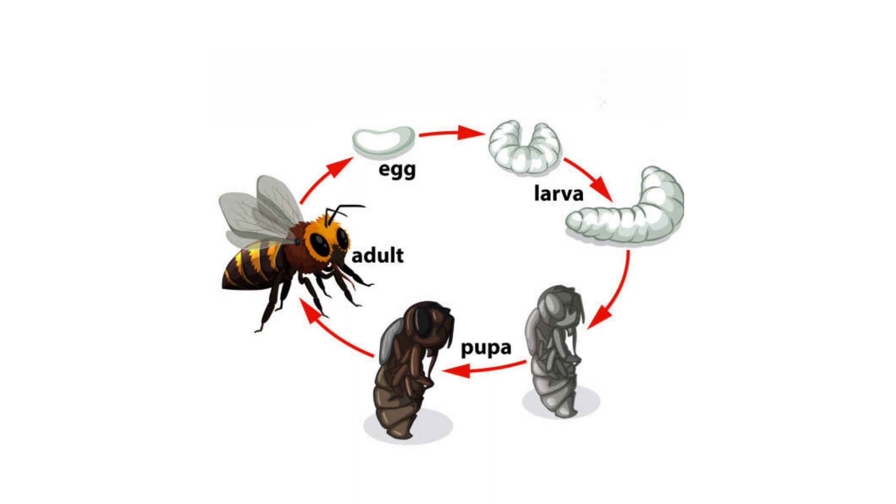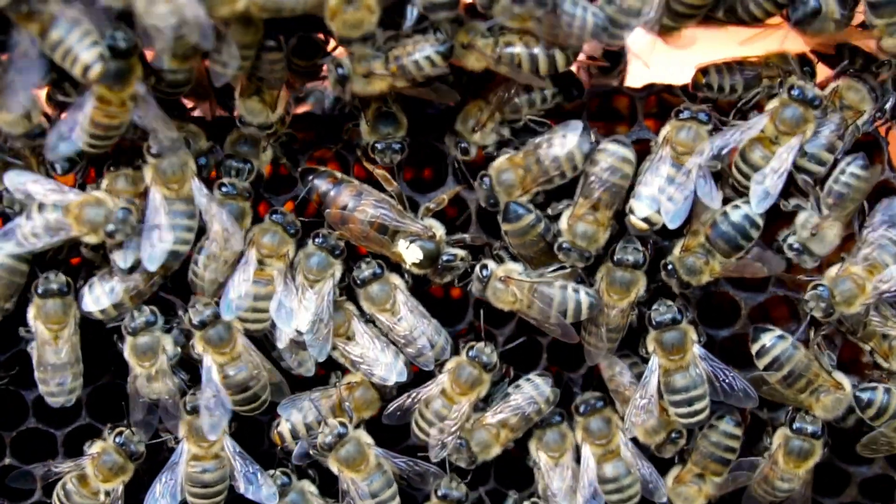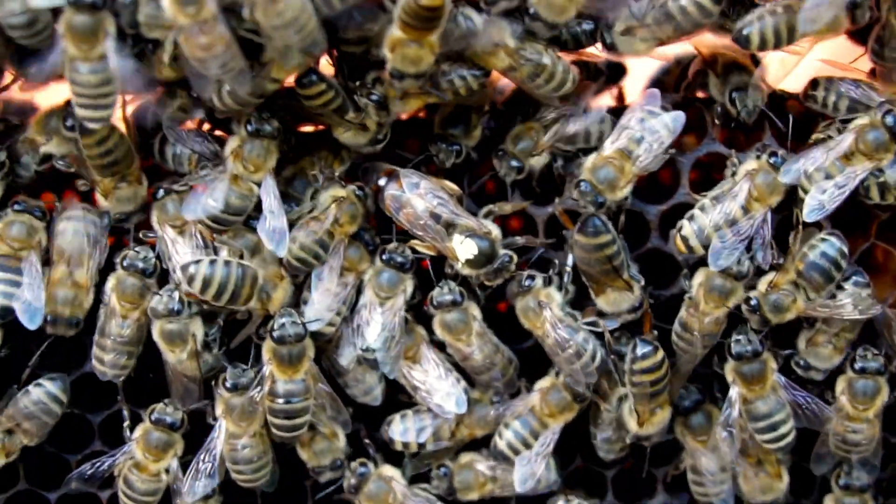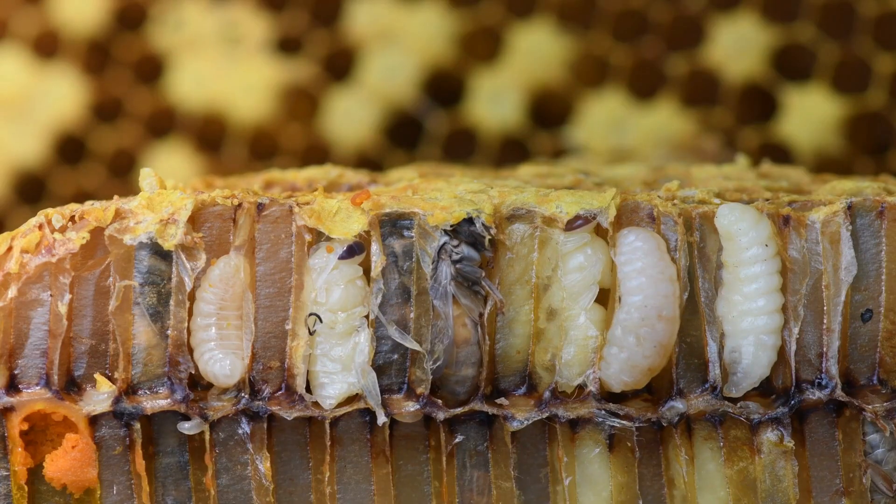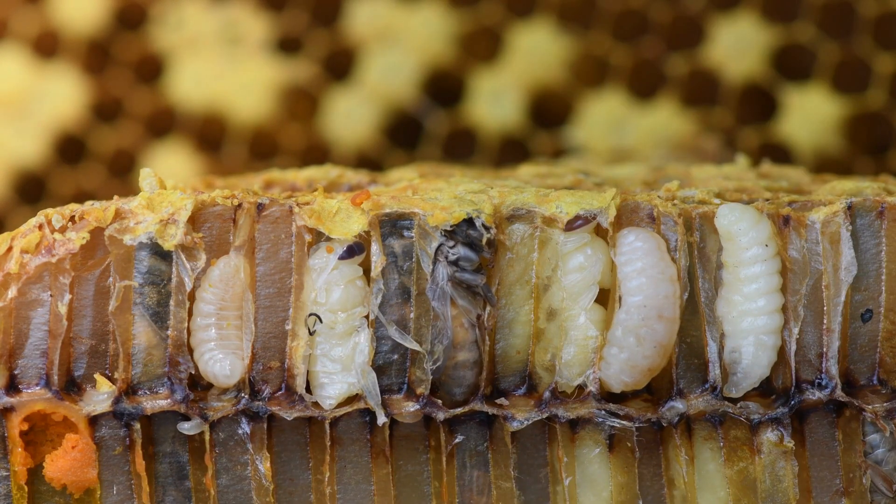The larva looks like a little worm and is very hungry. Worker bees feed the larva with special food called royal jelly and nectar. Once the larva has eaten enough and grown big enough, it becomes a pupa. The pupa looks like a little bee wrapped in a cocoon.